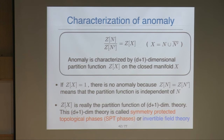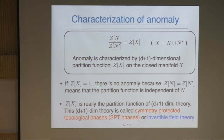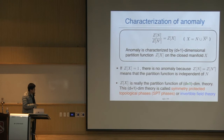If the bulk partition function on a closed manifold is equal to one, then there is no anomaly — the partition function is independent of N. So Z(X) is really the partition function that characterizes anomaly. This (D+1)-dimensional theory is called by condensed matter physicists a symmetry protected topological phase (SPT phase), and is also called an invertible field theory by mathematicians.